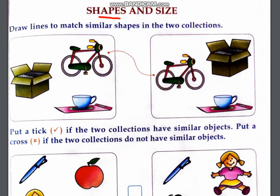Next is shape and size. Draw a line to match similar shapes of the same size. You have to match the same shapes, the cycle. Then we will match it here. You have to show the box.